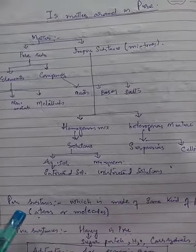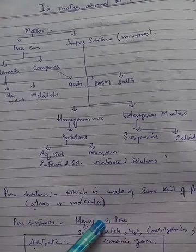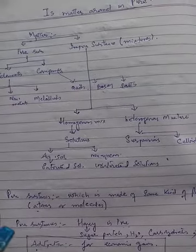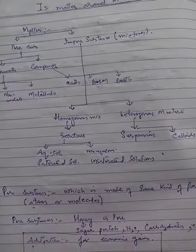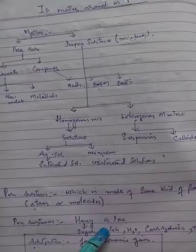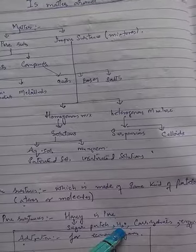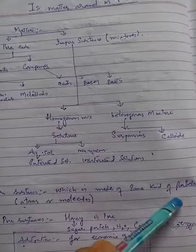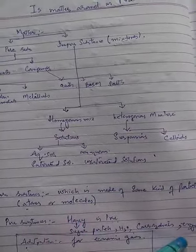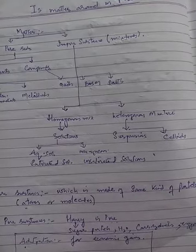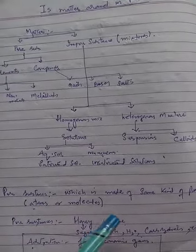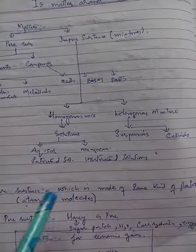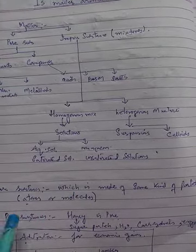For example, in common language we say honey is pure. But when we look at the composition of honey, we see it consists of sugar particles, water molecules, carbohydrates, and enzymes. So honey consists of different kinds of particles and different kinds of atoms. Therefore, honey is not a pure substance in chemistry because it is made up of sugar, water, carbohydrates, and enzymes. In common language, we say pure honey is pure when it does not contain any adulterants.